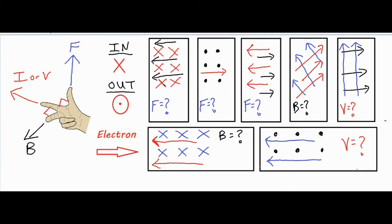So with our right-hand rule set: our thumb is pointing straight up towards the ceiling, our pointer finger is pointing straight away from us, and our middle finger is pointing directly to the left. A lot of us are right-handed, so the method is to always put your pencil down and then apply the right-hand rule. If you're left-handed, you have the advantage of not needing to put down your pencil. Let's try seven different examples.